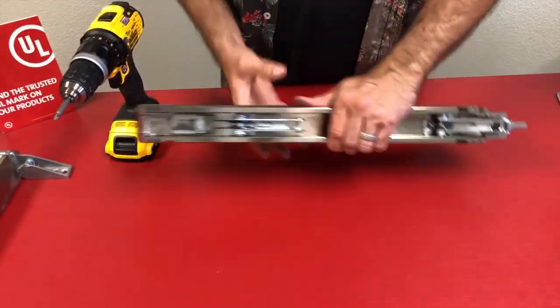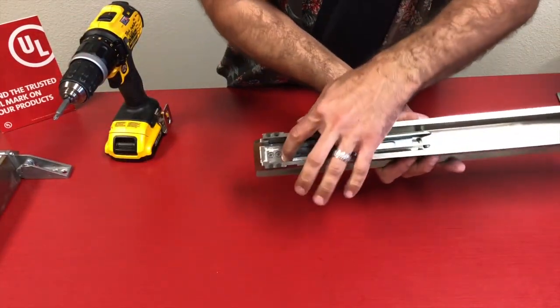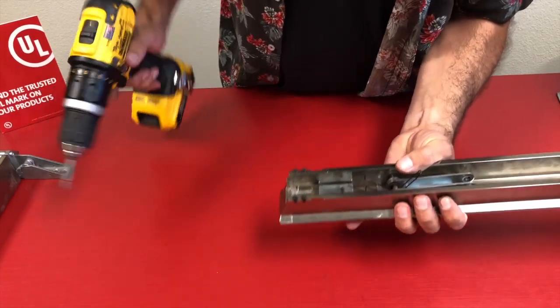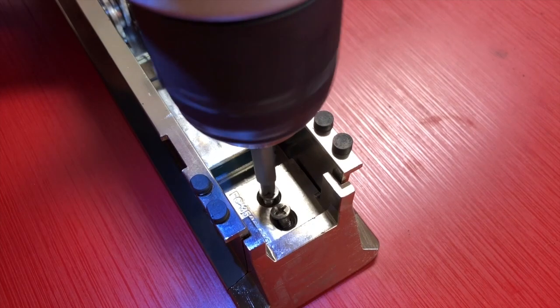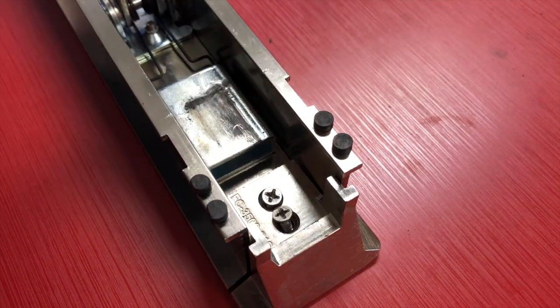Next I'm going to flip over the push pad. On the underneath of the front side there's two phillips head screws. I'm just going to remove both of those screws so I can slide that push pad end cap off.